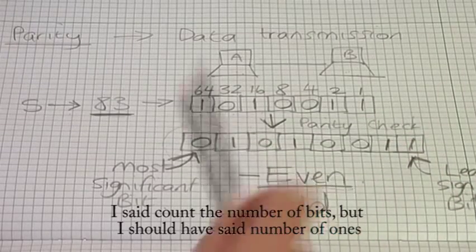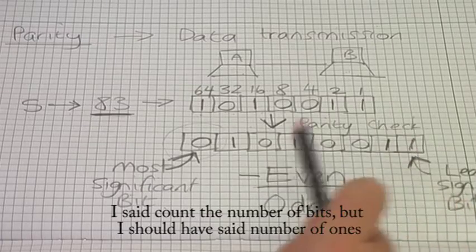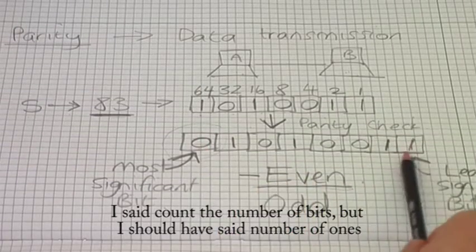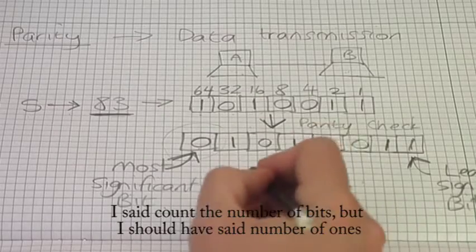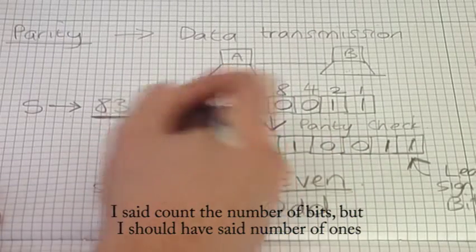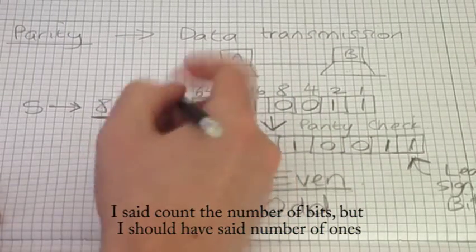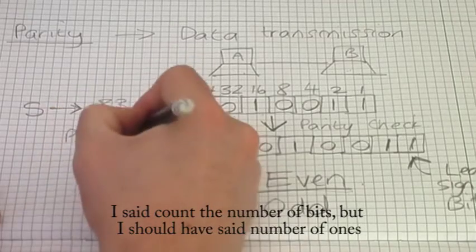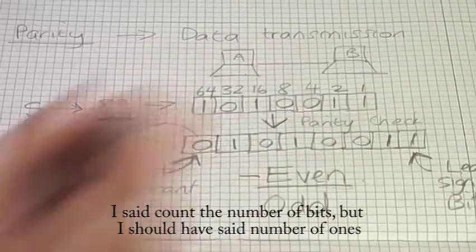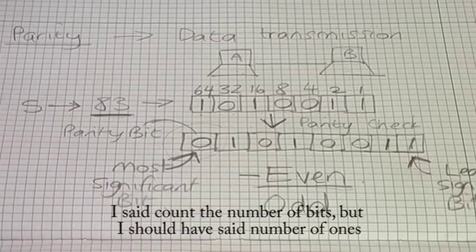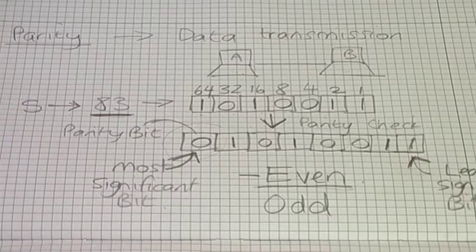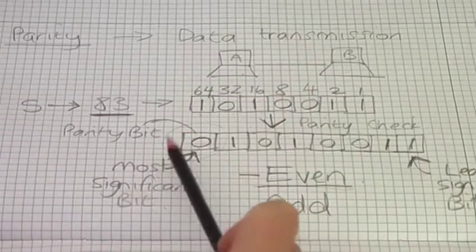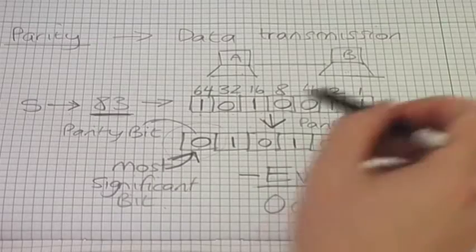Now that is an even number of ones, so the parity bit is going to be a zero, because I already have an even number. So now when I count the number of ones — one, two, three, four — I put a zero in there and I've still got an even number. So my parity bit in this case was a zero. Computer A is now going to send that byte of data to computer B.